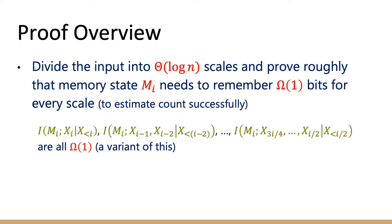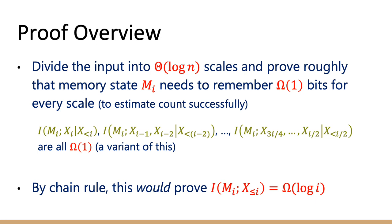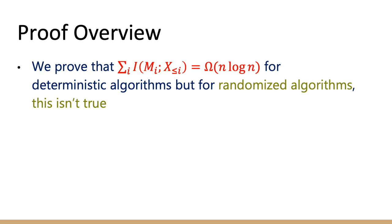We prove a variant of this. To gain intuition, you can convince yourself the statement holds when Mᵢ simply keeps the count of the first i bits. By the chain rule, this would prove that the mutual information between Mᵢ and the input string up to step i is Ω(log i), and summing over i from 1 to n gives the lower bound on the information cost of M. Indeed, we prove that the sum over i of I(Mᵢ : X₁…Xᵢ) is Ω(n·log n) for deterministic algorithms.